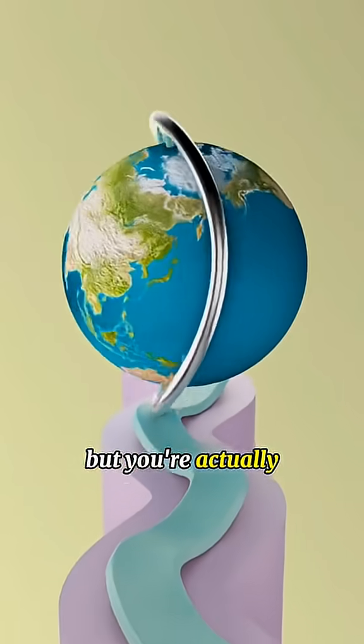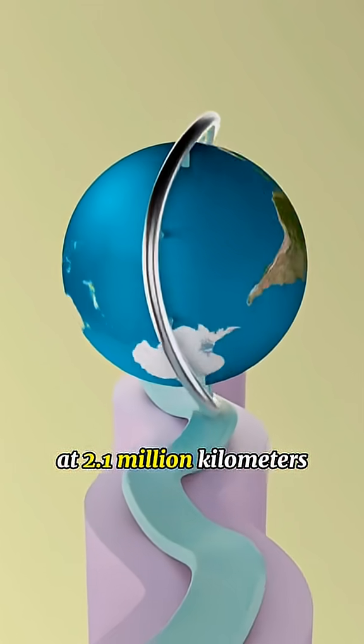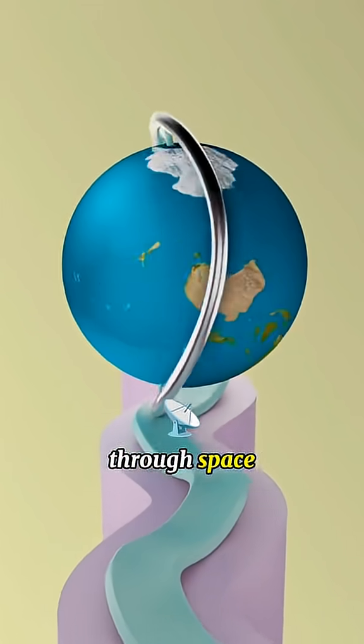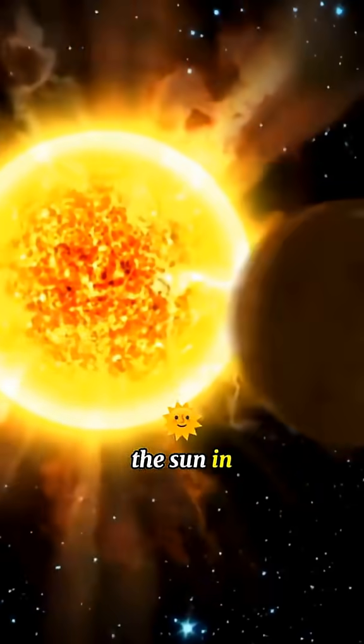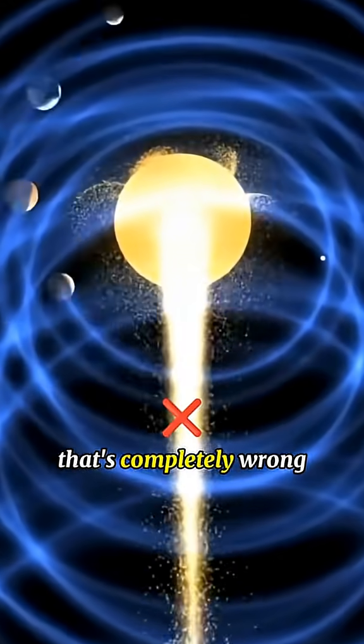Now you think you're standing still, but you're actually moving at 2.1 million kilometers per hour through space. Most people think the Earth orbits the Sun in a nice circular path, but that's completely wrong.